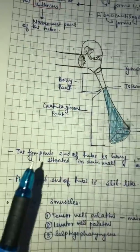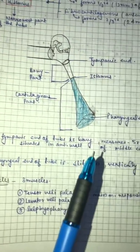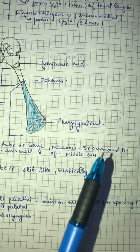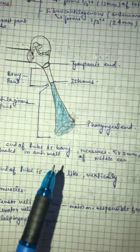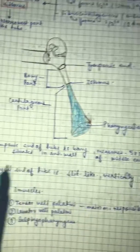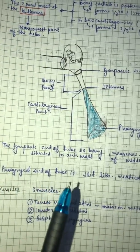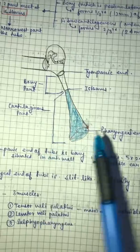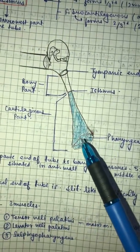Then the tympanic end of tube is bony, measured 5 x 2 mm, and is situated in anterior wall of middle ear. Then pharyngeal end of tube is slit-like vertically. As you can see, this is slit type of opening.